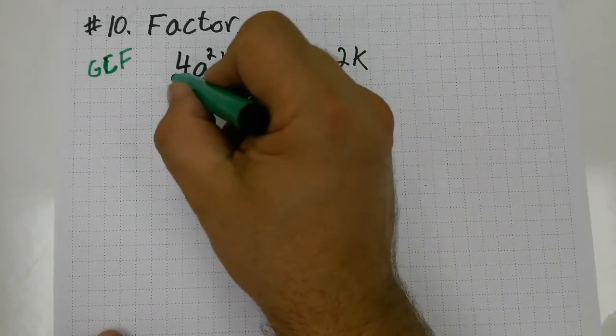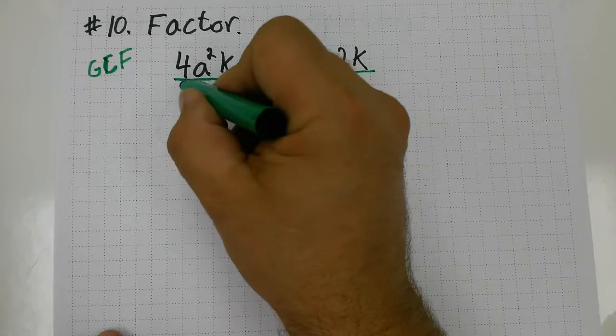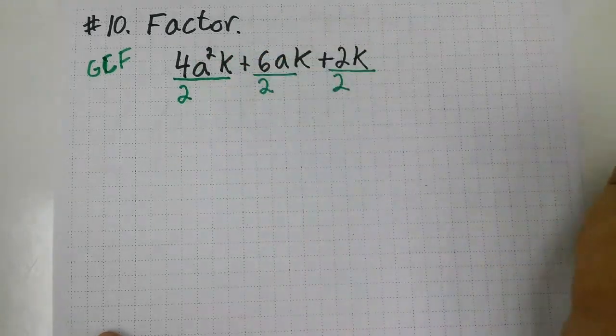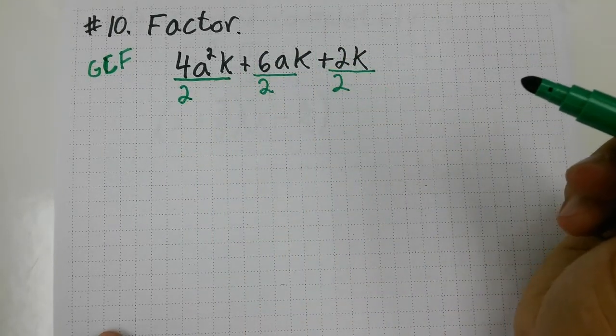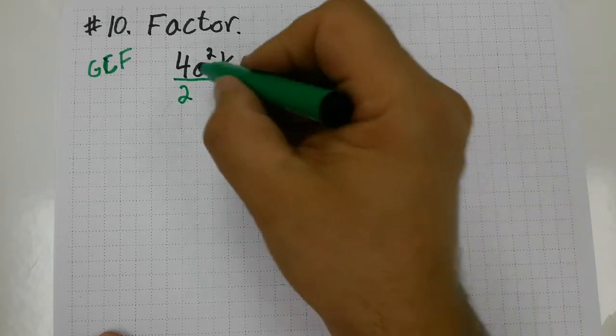And the digit 2 goes into each of those evenly with no remainder or no decimal. Now, I have to figure out what letter goes evenly into all of these. Notice there's not an a in each of these terms, but there is a k. So, I can pull a k out of each of these.